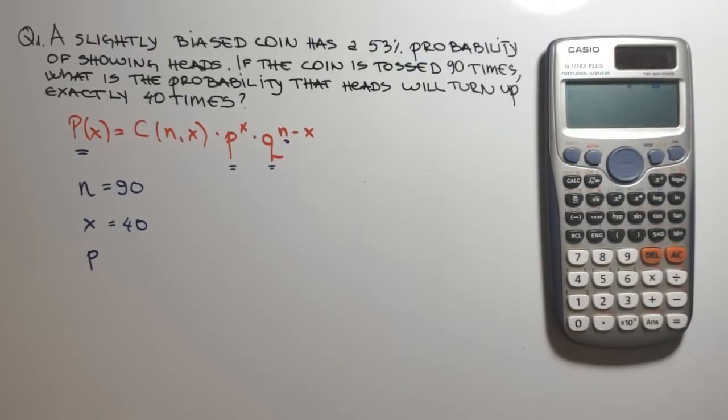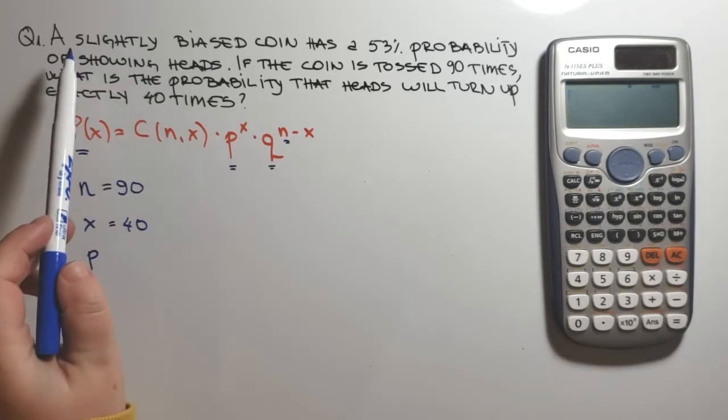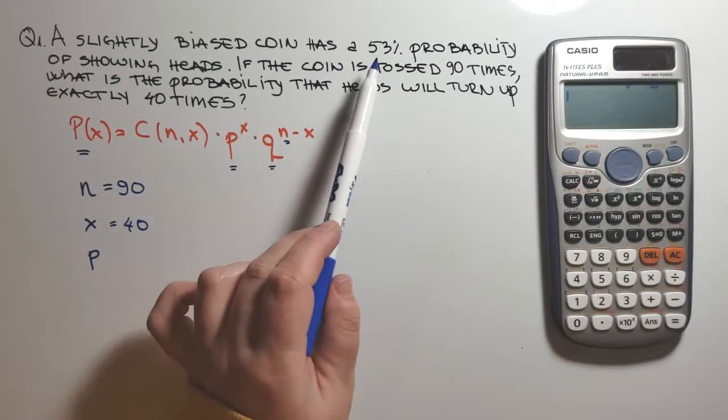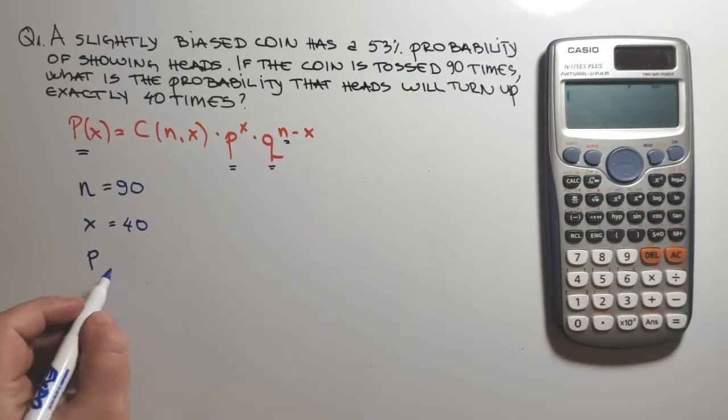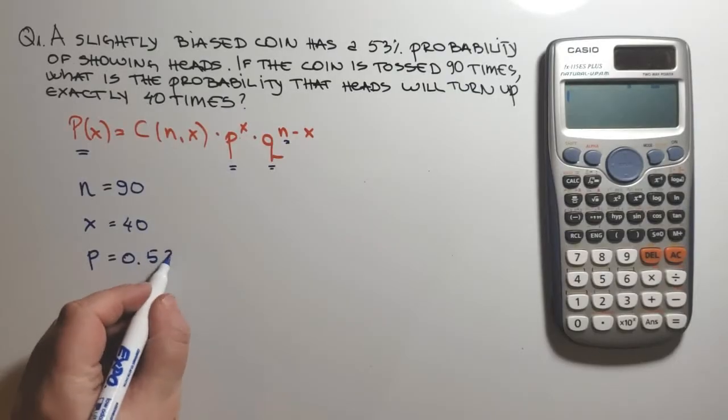Now what is the probability of getting a successful event of getting heads? We see here a slightly biased coin has a 53% probability of showing heads. So for P we have 0.53.